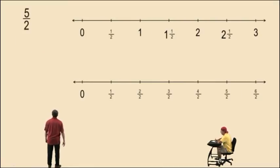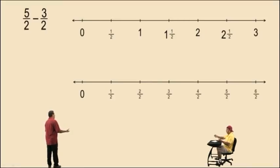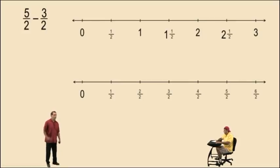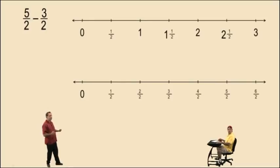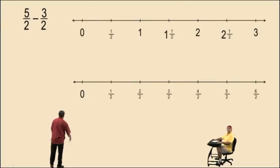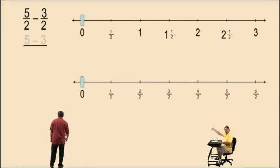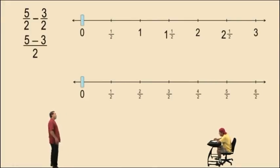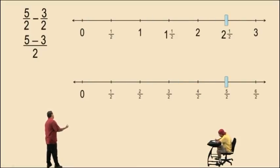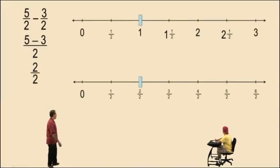Let's work with halves. Here we have 5 halves subtract 3 halves. Charlie, if you had 5 apples and somebody takes away 3 of your apples, how many apples do you have left? 2 apples. That's right. So if you have 5 halves and somebody takes away 3 of your halves, how many halves do you have? 2 halves. Very nice there, Charlie. Now pay attention. Remember, we work with our numerator and our denominator remains unchanged. So: 5 halves, and now we're going to take away 3 halves, and that gives us 2 halves. And that is our answer.